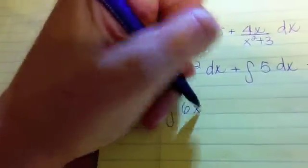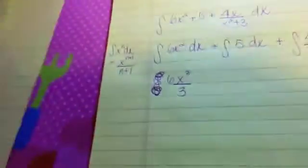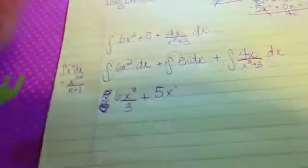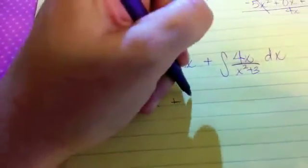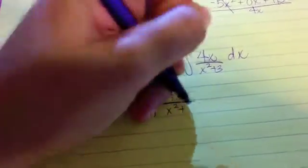So then we just do the power rule with the x. x to the third power all over 3, and then we'll simplify that a bit. And then plus 5 and then x to the 1 over 1. And then plus we just have to do the integral of this last term here, so 4x over x squared plus 3.